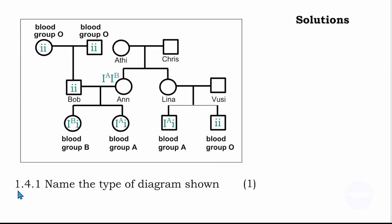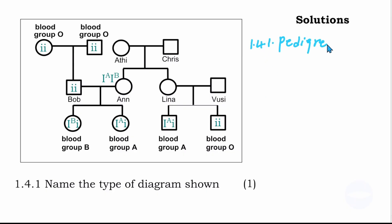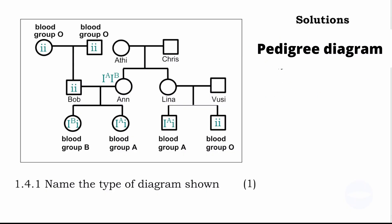Question 4.1.1 asks: name the type of diagram shown. This diagram is called a pedigree diagram.